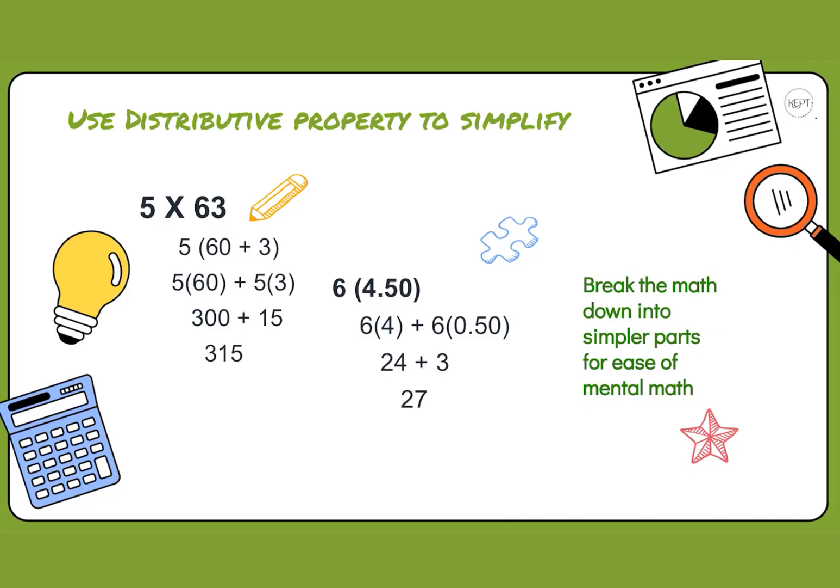When we have numbers together, for example 63, we can decompose those numbers because what this really means is that we have six tens and three ones. We can separate those from one another, giving us 60 plus 3. Then we can do our distributive property there.